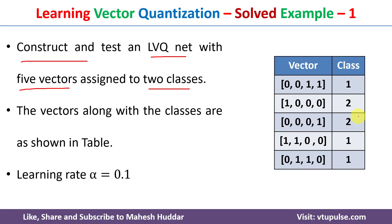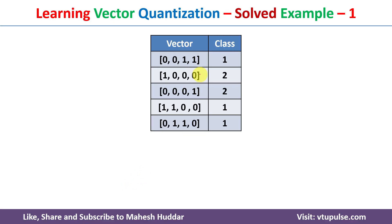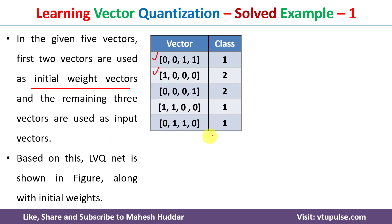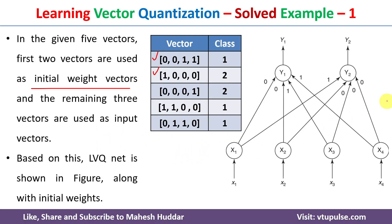Each of these five vectors is assigned to one of two classes, either class one or class two. The learning rate given is α = 0.1. From the input vectors, we will consider the first and the second one as the initial weight vectors, and the remaining three will be considered as the input vectors. Based on this assumption, the LVQ network will look something like this.